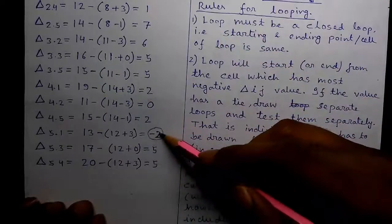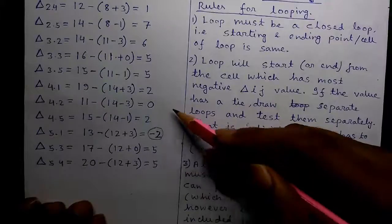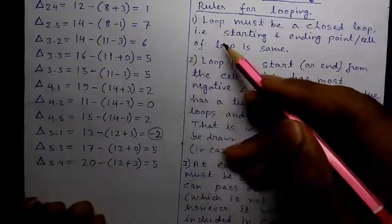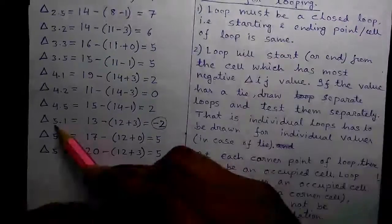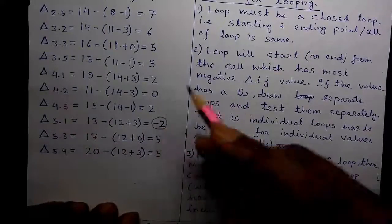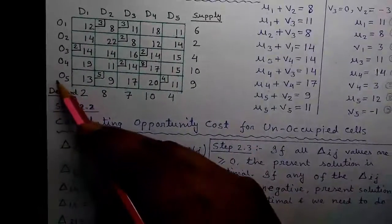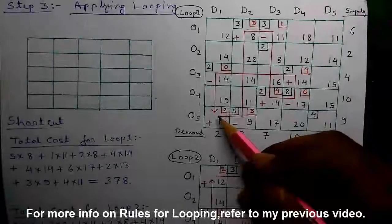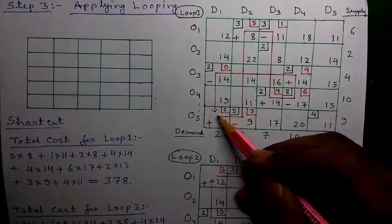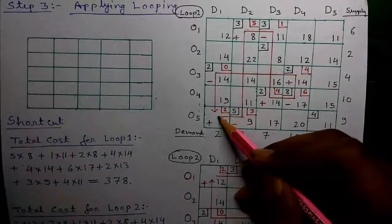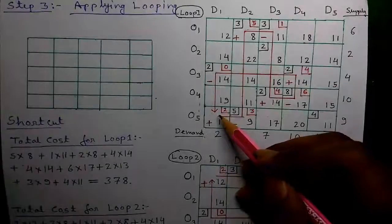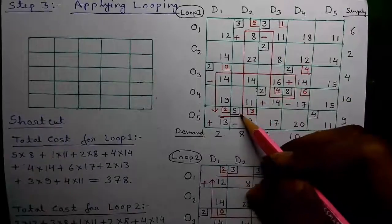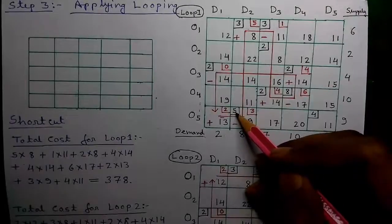Remember, in case of looping, first you have to check for the most negative value and start the loop from that cell. In our case, both negative values are the same, so we are compelled to draw two separate loops. At del(5,1), row 5 column 1, there is a negative value. According to the rules, the loop starts from the cell with the most negative del_ij value. The loop is drawn using straight lines and can bend only at cells which are allocations.